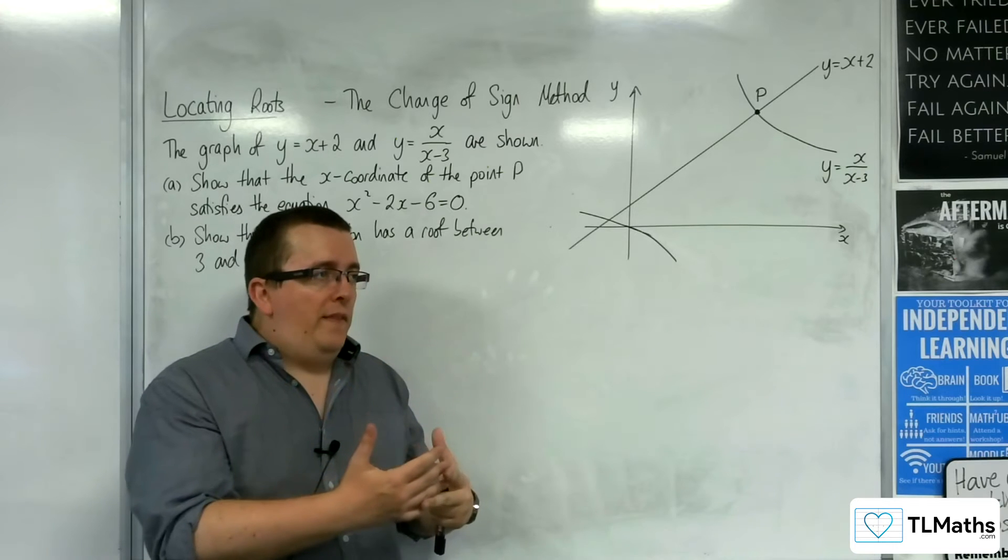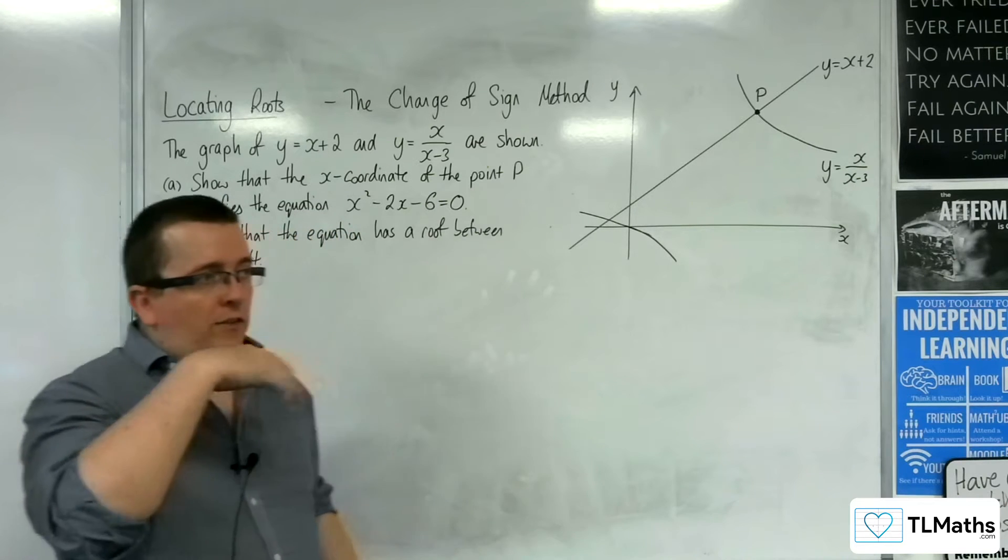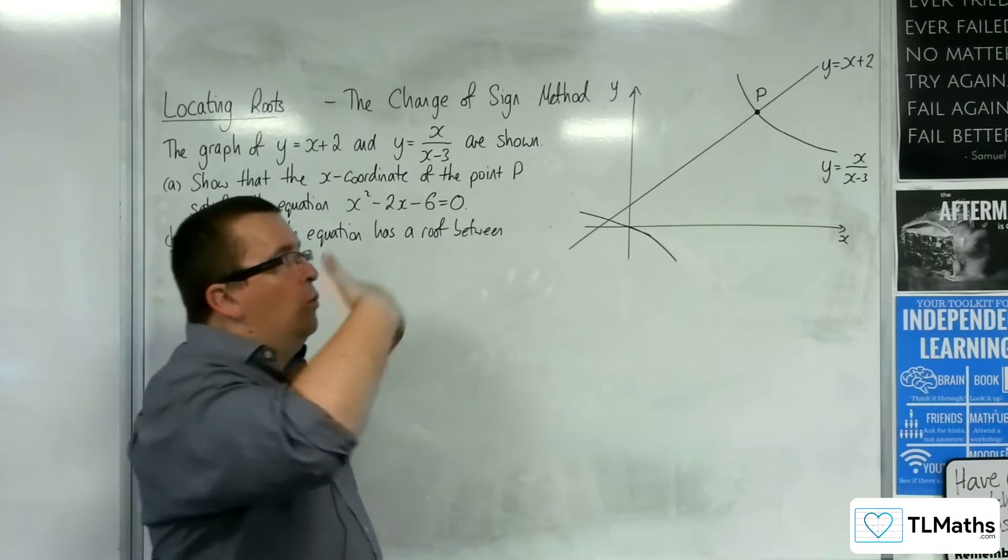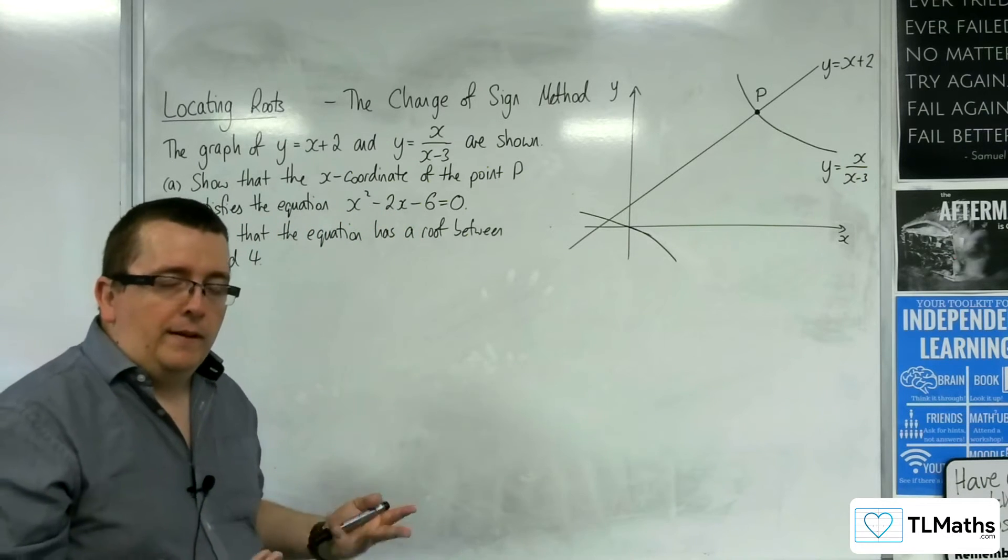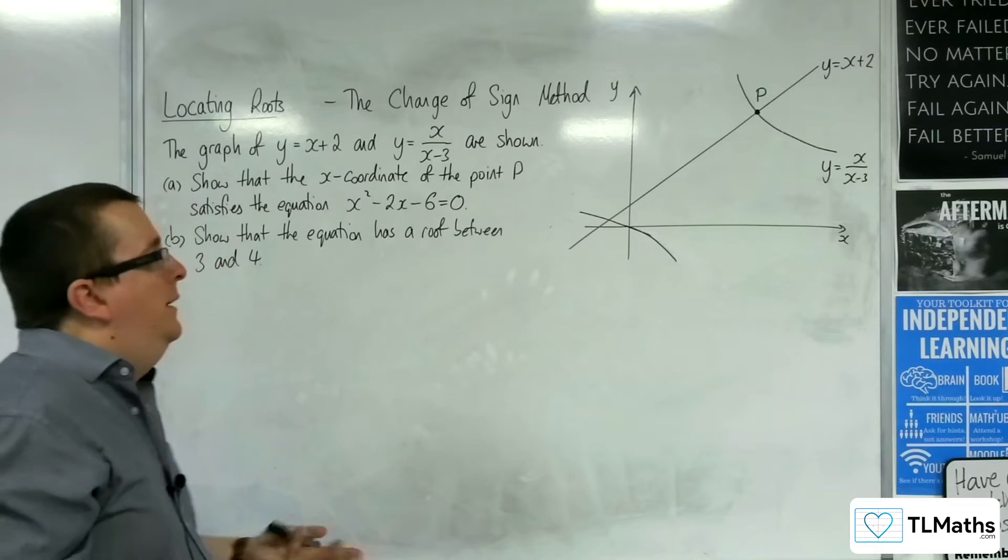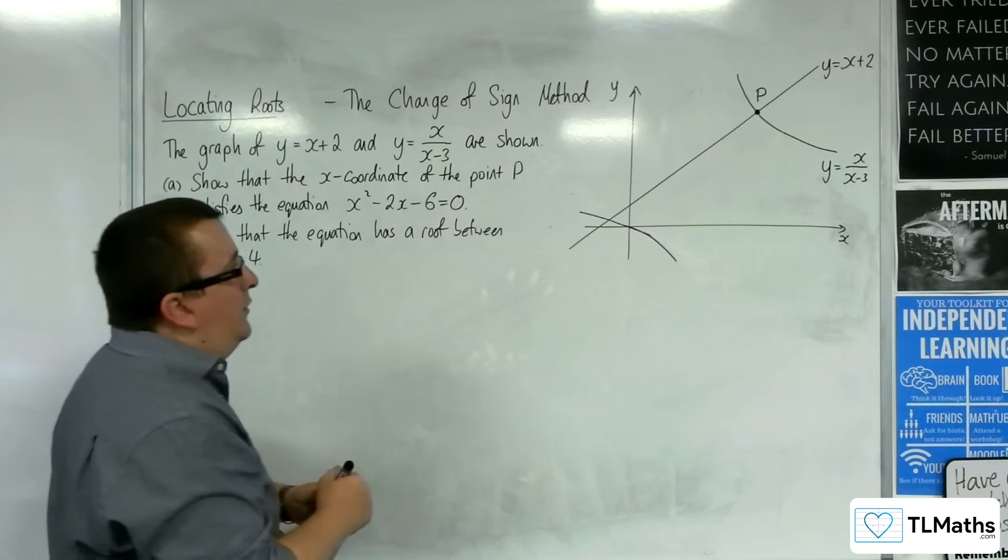When we've done this before, when we've looked at other examples, you can work out where two graphs intersect by putting them equal to one another using simultaneous equations. That's exactly what part A is asking us to do.